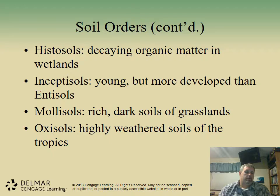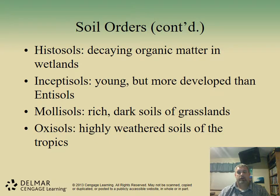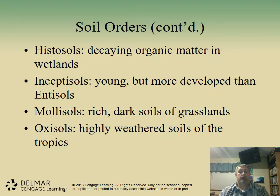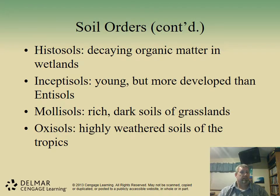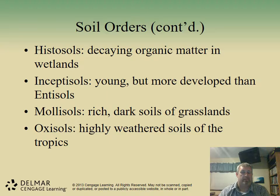Mollisols are probably the best growing soils — rich dark soils from the grasslands with lots of material great for growing. They are excellent for farmland and give you the best bang for your buck. Oxisols are highly weathered soils found in the tropics and are very rare — we do not see them in the United States. They are found more in rainforest areas between the Tropic of Cancer and the Tropic of Capricorn.